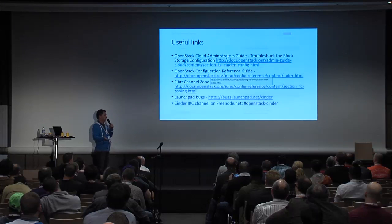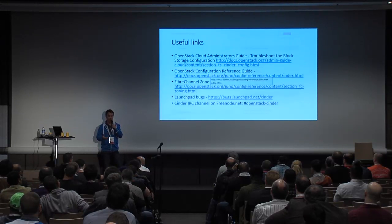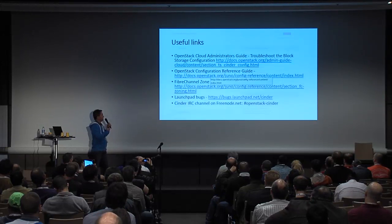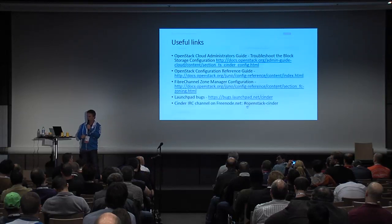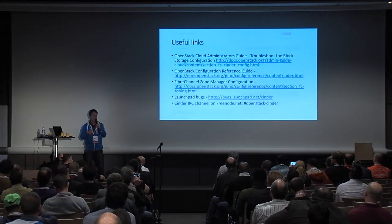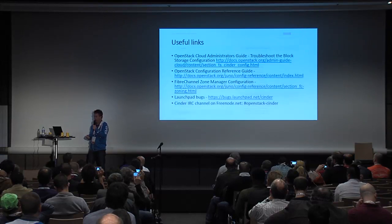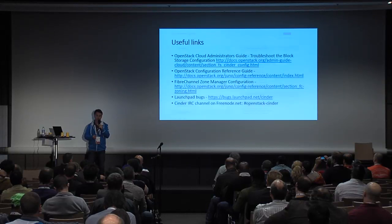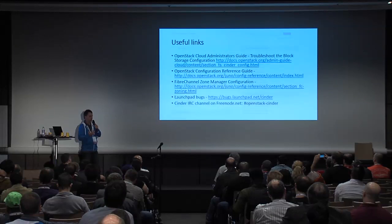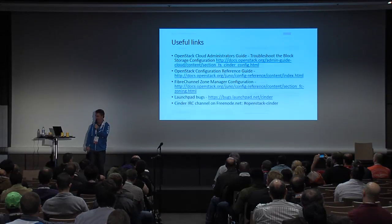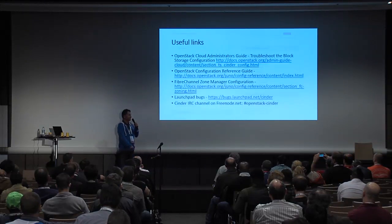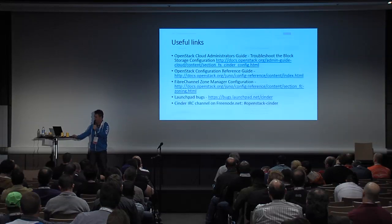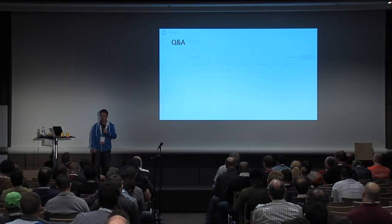That doesn't cover all of the problems you might see with attachments, but it covers a good majority of the simpler cases that are actually pretty hard to debug. The cloud administrator guide and the configuration reference guide give you good information on how to configure Cinder and the drivers involved, as well as the zone manager configuration — non-trivial things, and each driver has its own specific configuration items you need to get right. If all else fails, we provide a Launchpad link so you can file bugs. The Cinder team usually sits in the OpenStack Cinder channel on Freenode. If you have any questions, now's a good time to ask, or you can reach us on IRC.